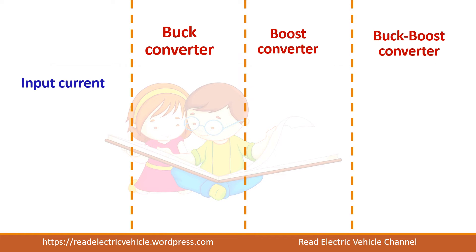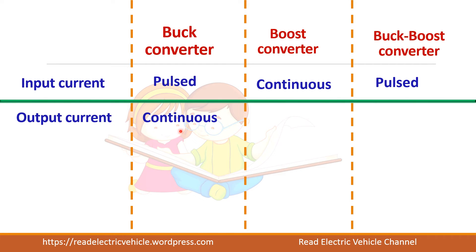We can examine whether the input current is continuous or discontinuous for each converter. In the buck converter the input is connected only when the switch is on, and disconnected when the switch is off, so the input current is pulsed. In the boost converter the source is connected in both on and off conditions, so it has continuous input current. In the buck-boost converter the input current is also pulsed. For output current, the boost converter has discontinuous output current, and the buck-boost converter output is also pulsed.